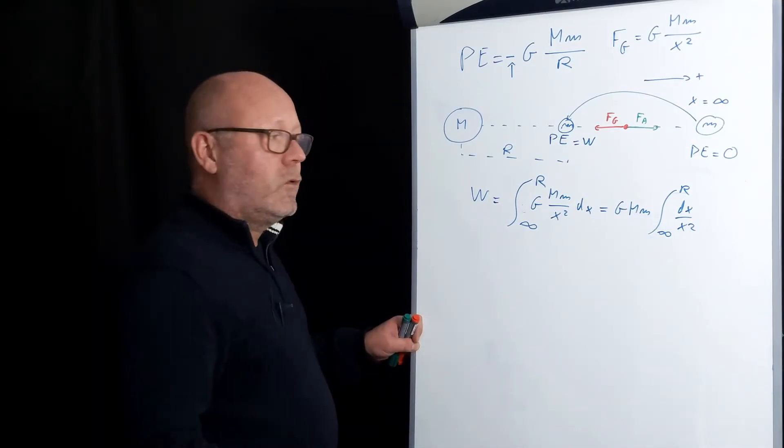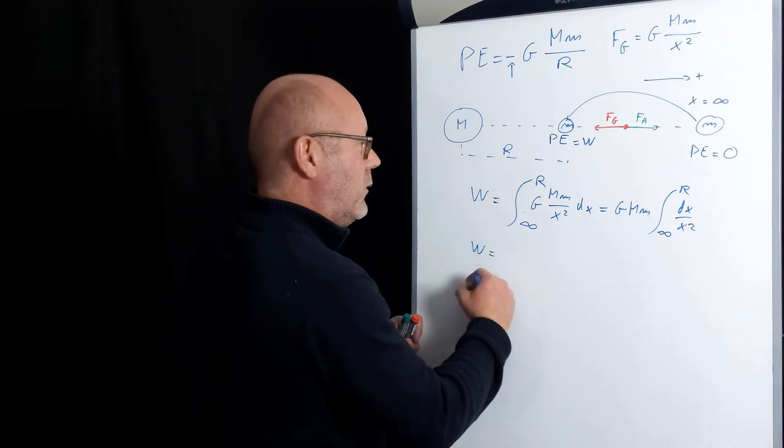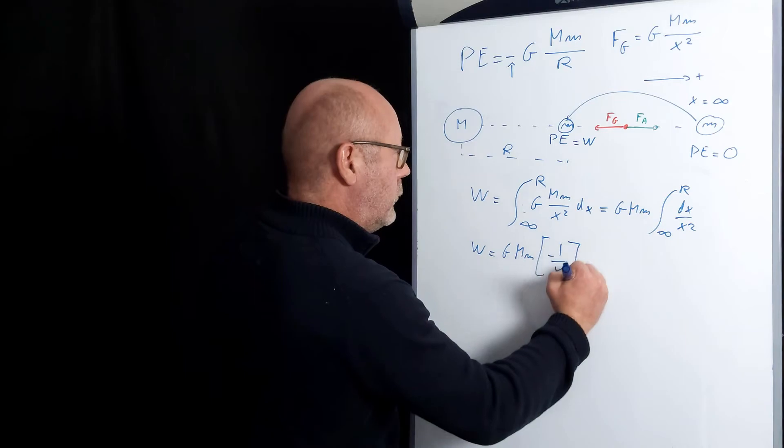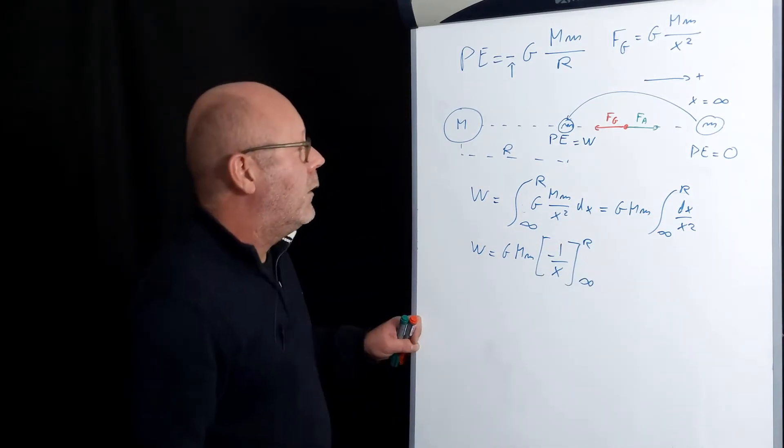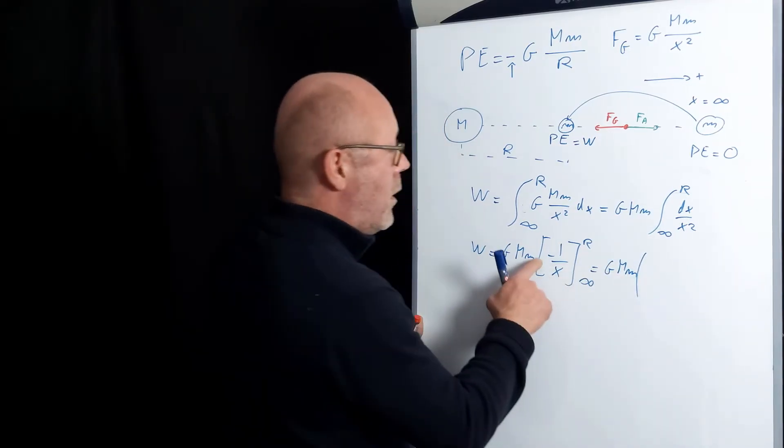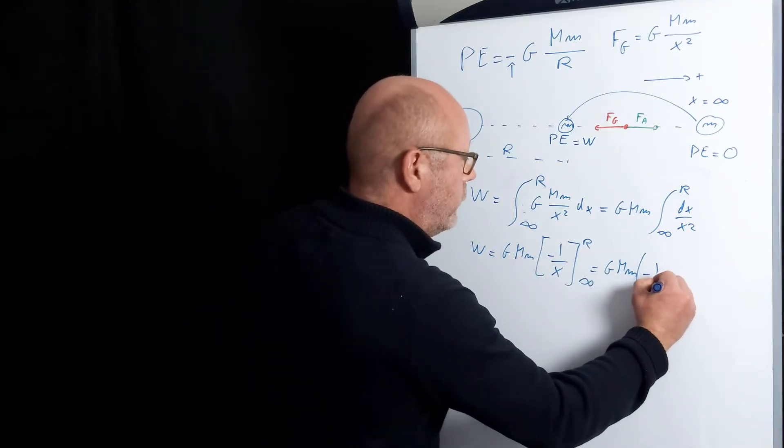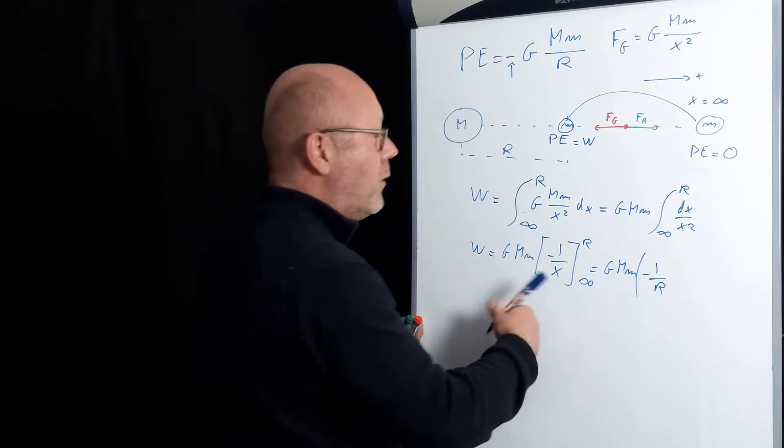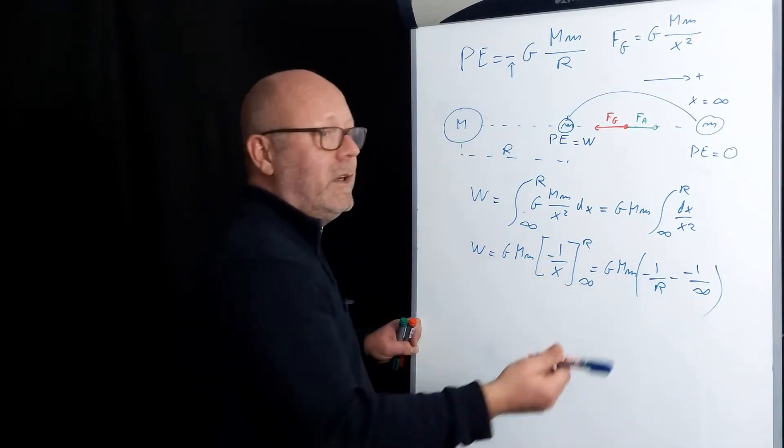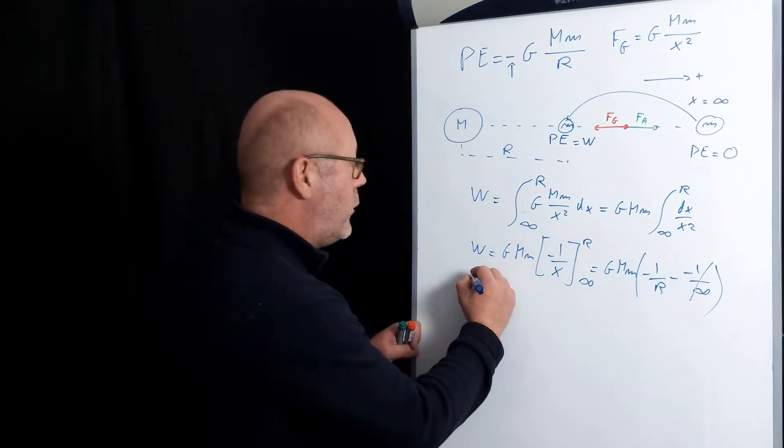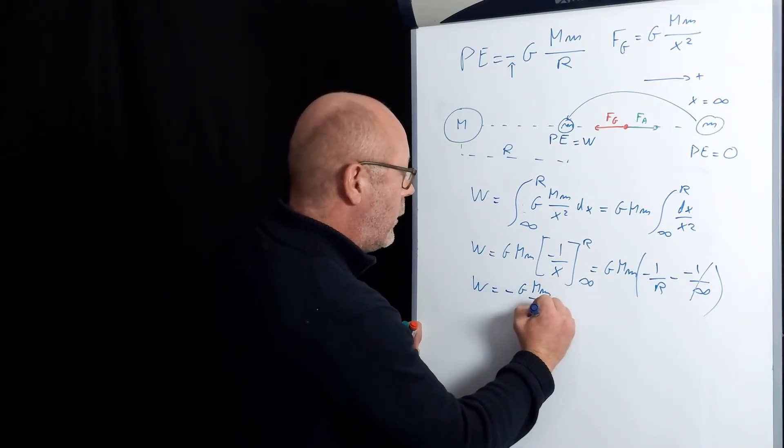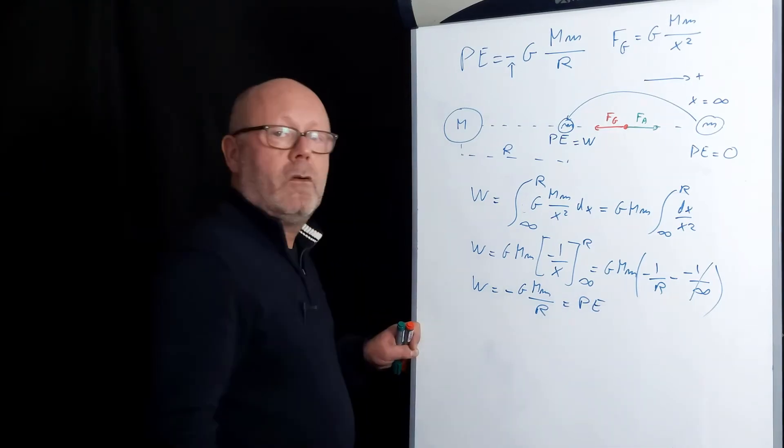What is the primitive of 1 over x squared? It's minus 1 over x. So I can put this between r and infinity. I just develop that. So minus 1 over r—that's the final position—and the initial position, minus minus 1 over infinity. Well, 1 over infinity is zero. So I end up with minus G M m over r, which is my gravitational potential energy.